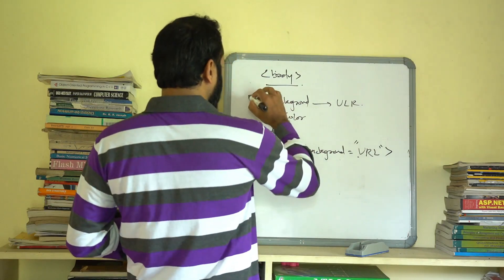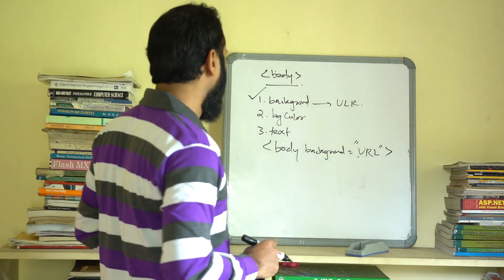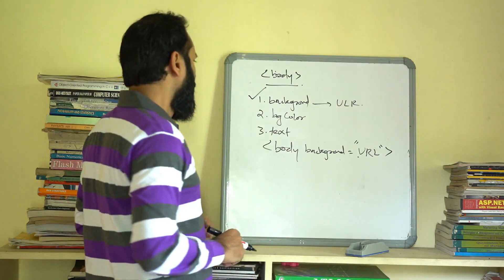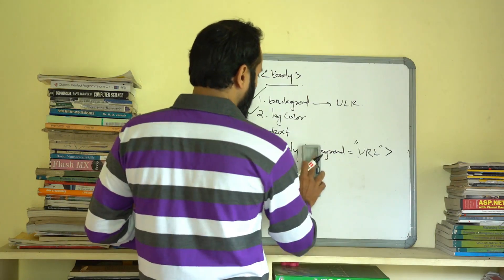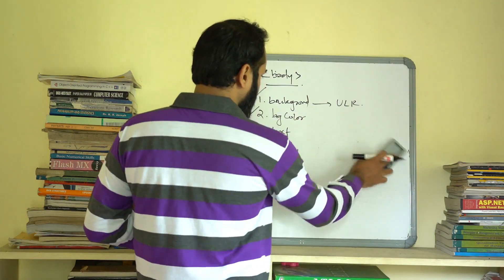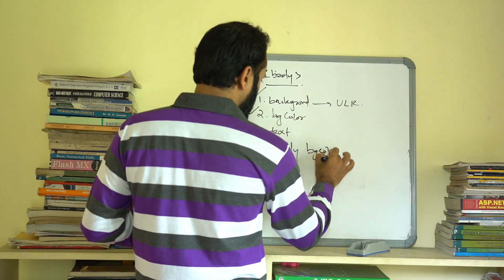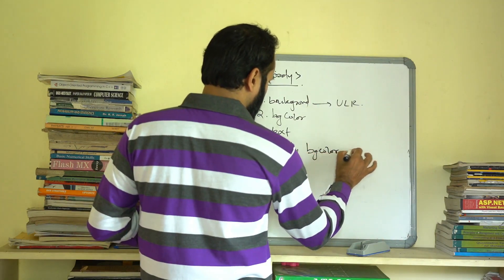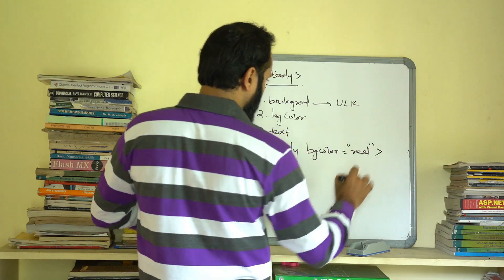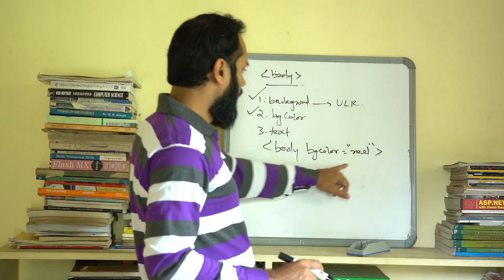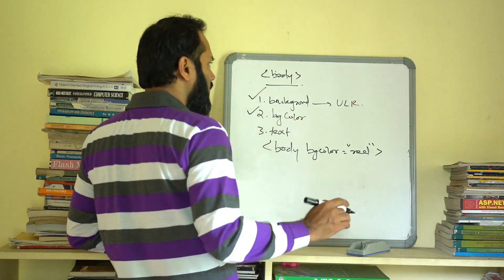If you want to use a background color on the body, we use the bgcolor attribute. We will use the color for the background. You can use color names directly such as red, blue, or green.